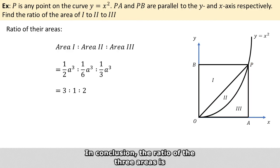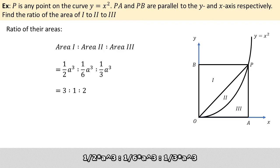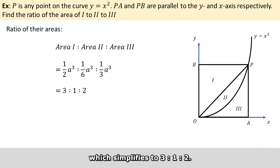In conclusion, the ratio of the three areas is (1/2)a³ to (1/6)a³ to (1/3)a³, which simplifies to 3:1:2.